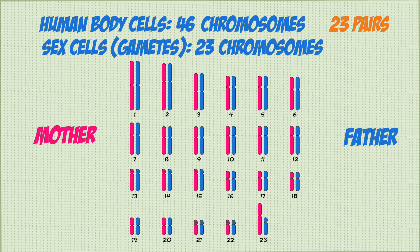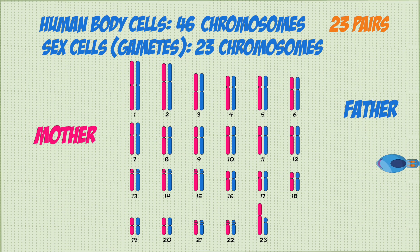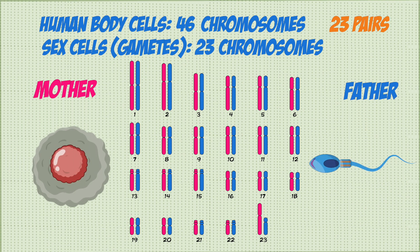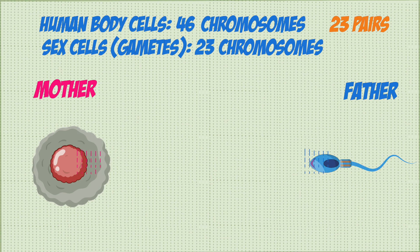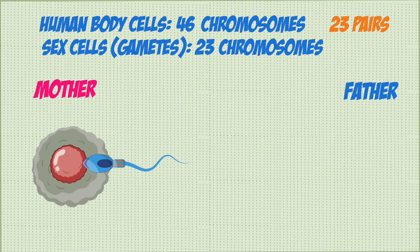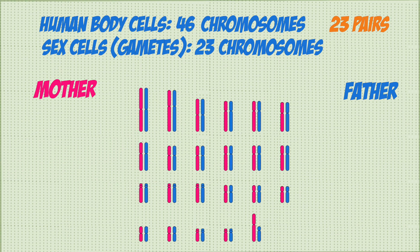have half the number of chromosomes. So sperm cells and egg cells both have 23 chromosomes each. And when the sperm cell fertilizes the egg, it forms a full set of 46 chromosomes which create a new organism.